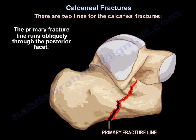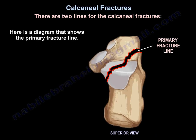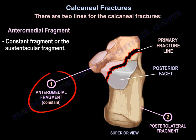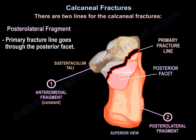The primary fracture line runs obliquely through the posterior facet. The primary fracture line divides the calcaneus into two parts: an intermedial sustentacular fragment and a posterolateral tuberosity fragment. Here is a diagram that shows the primary fracture line.